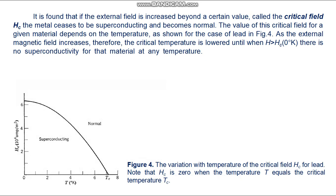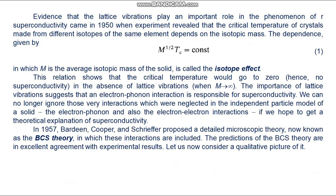The value of the critical field for a given material depends on the temperature, as shown for lead in figure 4. Evidence that lattice vibrations play an important role in superconductivity came in 1950 when experiments revealed that the critical temperature of crystals made from different isotopes of the same element depends on the isotopic mass, given by formula 1 — called the isotope effect. This relation shows that the critical temperature goes to zero (no superconductivity) in the absence of lattice vibrations when M goes to infinity.